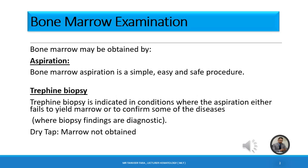The first procedure is aspiration. Bone marrow aspiration is a simple, easy, and safe procedure. As its name indicates, it is the aspiration of marrow from the bones, and the aspirate should be in liquid or semi-liquid form. The second procedure is trephine biopsy, which is indicated in conditions where aspiration either fails to yield marrow or is needed to confirm diseases where biopsy findings are diagnostic.